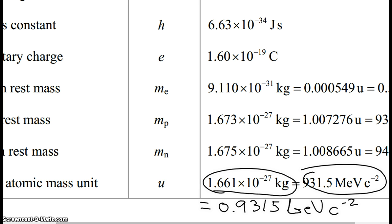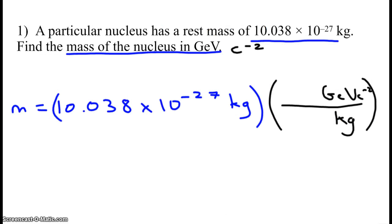So 1.661 E negative 27 kilograms is equal to this many gigaelectron volts. Let's write that down as our conversion factor. How many kilograms was it? 1.661 times 10 to the negative 27. And what was it for gigaelectron volts? It was 0.9315. So what's the mass going to be? You just calculate.